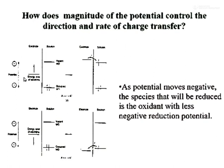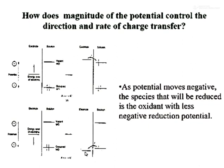This can be explained using a molecular orbital diagram. If you decrease the potential to a certain level, the HOMO of the electrode becomes slightly higher in energy than the LUMO of the analyte, and hence electrons jump from the HOMO of the electrode to the LUMO of the analyte at negative potential — this is reduction. Conversely, at positive potential, the LUMO of the electrode decreases in energy, so electrons jump from the HOMO of the analyte to the LUMO of the electrode — this is oxidation.